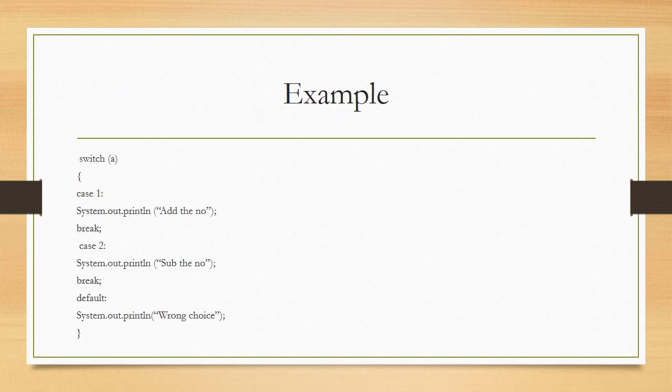Example: switch (a) { case 1: System.out.println("add the number"); break; case 2: System.out.println("subtract the number"); break; default: System.out.println("wrong choice"); }. Here 'a' is the control variable. If a is 1, the computer shows 'add the number' and switch terminates. If a is 2, it shows 'subtract the number'. If the user enters any other number such as 0, 3, 4, or 5, the default part executes and shows 'wrong choice'.